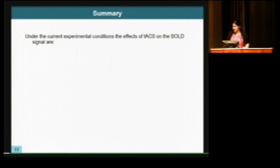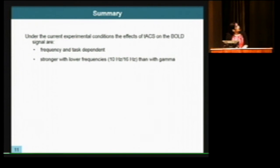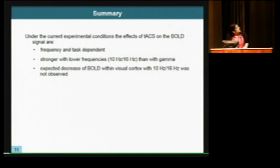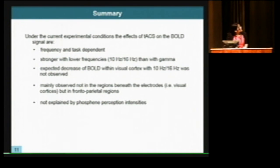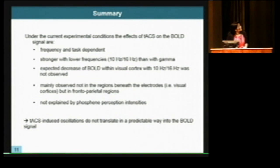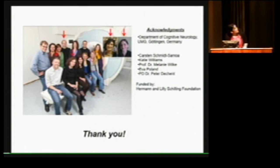To conclude, under our experimental conditions, the effect of TACS on the BOLD signal is frequency- and task-dependent, and is stronger with lower frequencies — 10 and 16 Hz — while gamma frequencies showed little effect. The expected decrease of BOLD signal within visual cortex with 10 and 16 Hz was not observed. The stimulation effect is mainly observed not in regions beneath the electrodes but in distant frontal-parietal areas, and this is not explained by phosphene perception. In general, TACS-induced oscillations are not translated into BOLD signal changes in a predictable way. Thank you to my colleagues in the cognitive neurology department in Göttingen.